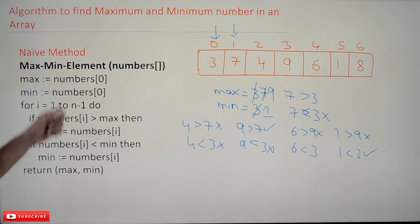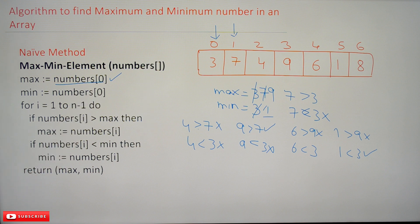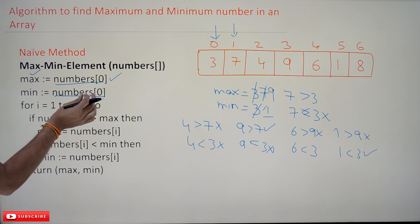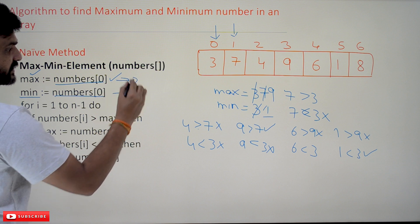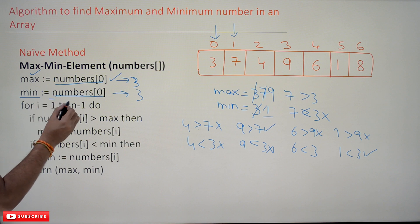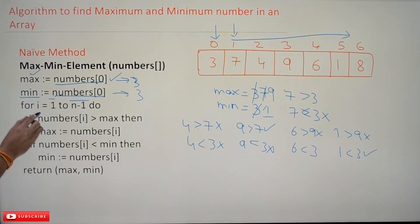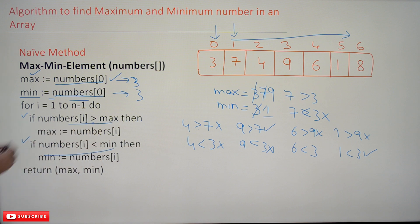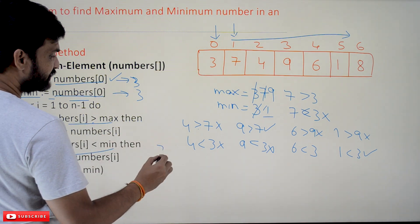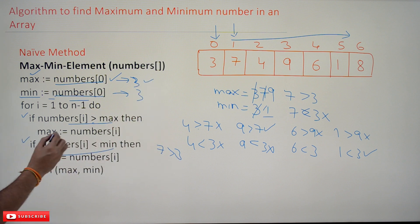Now let's understand the same using the formal algorithm. The first step is to consider the 0th element — numbers[0] — as the max, and the same element as the minimum. So the value is 3 in both cases. The loop iterates from index 1 to n minus 1, doing two comparisons each iteration: one to find the maximum and one to find the minimum. For index 1: numbers[1] is 7. Is 7 greater than max (which is 3)? Yes, it is true. So max is updated with numbers[1], which is 7.